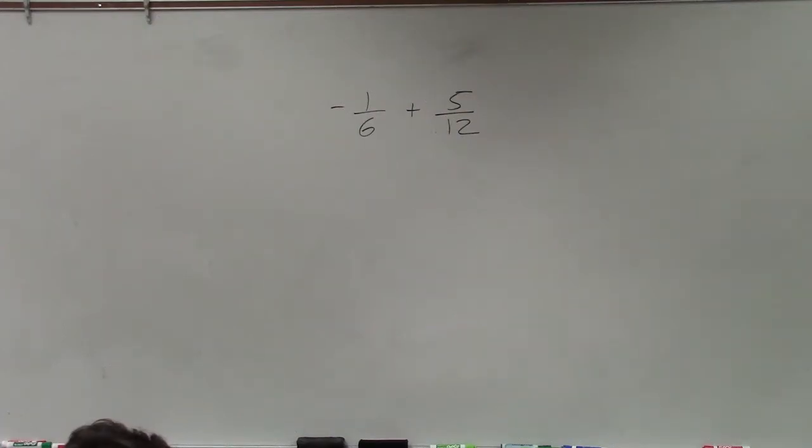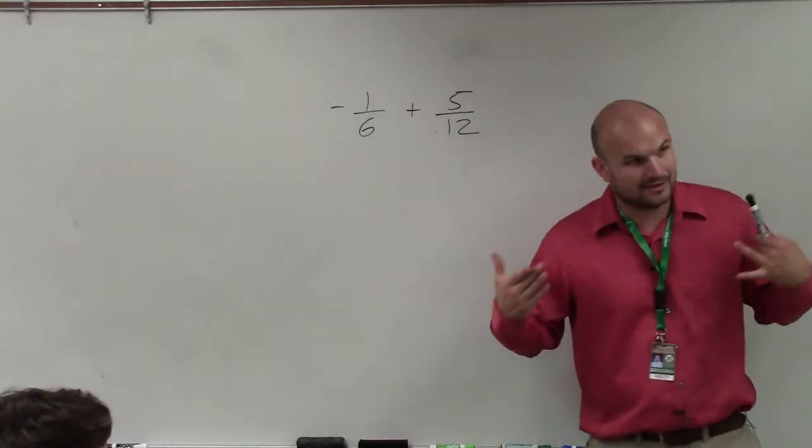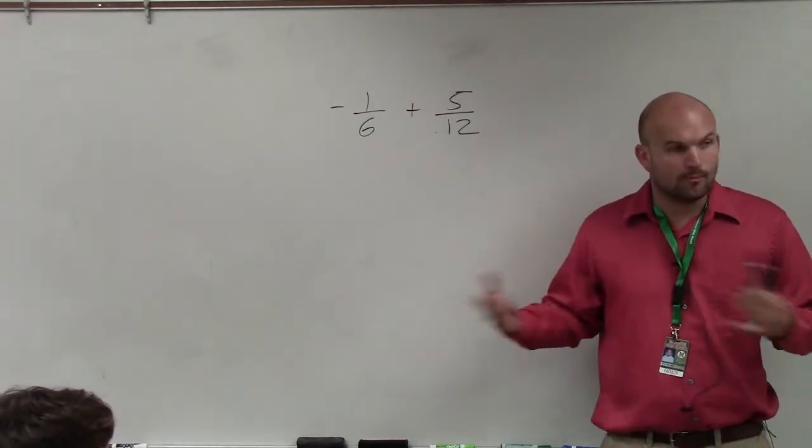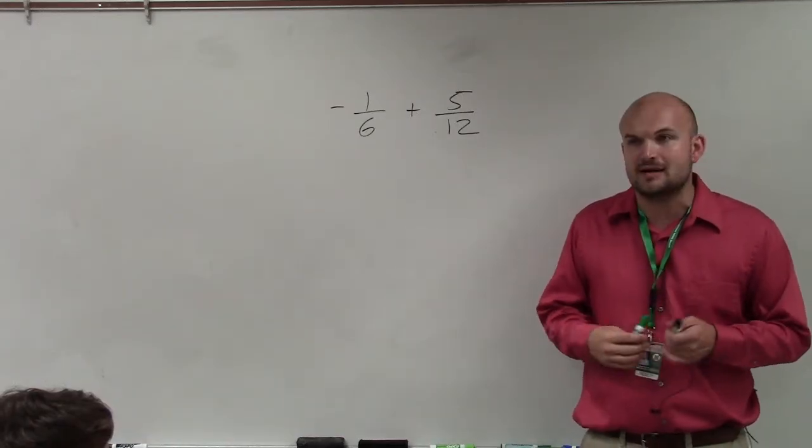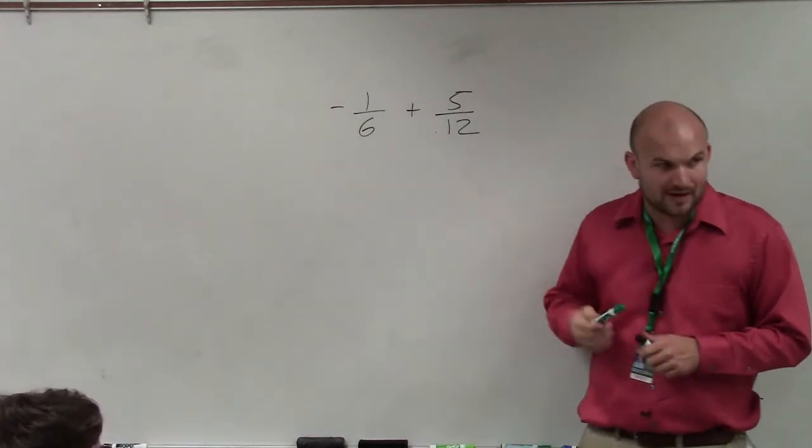All right. So in this case, I have negative 1/6 plus 5/12. Again, the common theme would be to multiply your denominators, right? I mean, that's one way to easily find the least common denominator, because right now you do not have common denominators.